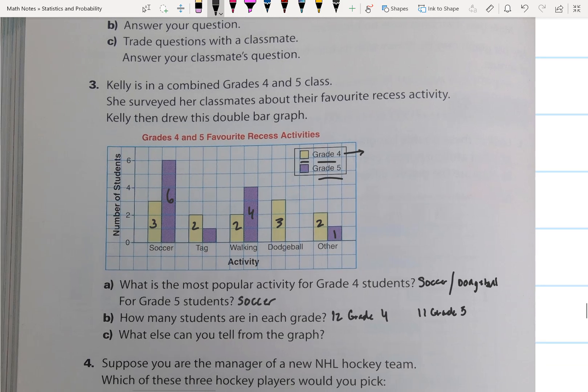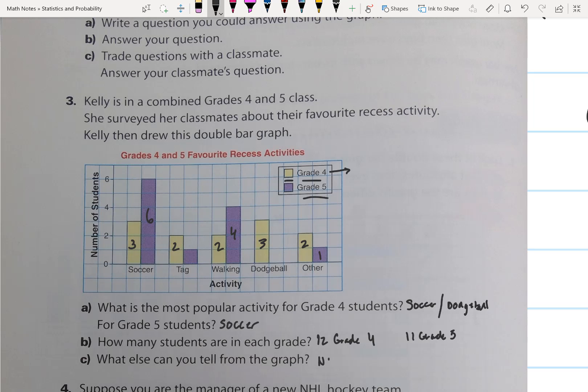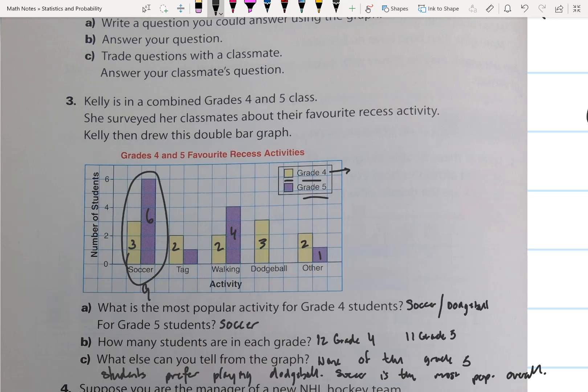What else could I tell from the graph? Well, I can tell that none of the grade 5 students prefer playing dodgeball. We can see there is no bar in dodgeball for the grade 5 students. And we can also see that soccer is the most popular overall, because if you add up these two numbers, that equals 9. This equals 6, 3 and 3. So the most popular sport for grade 5 and grade 4 added together is soccer.